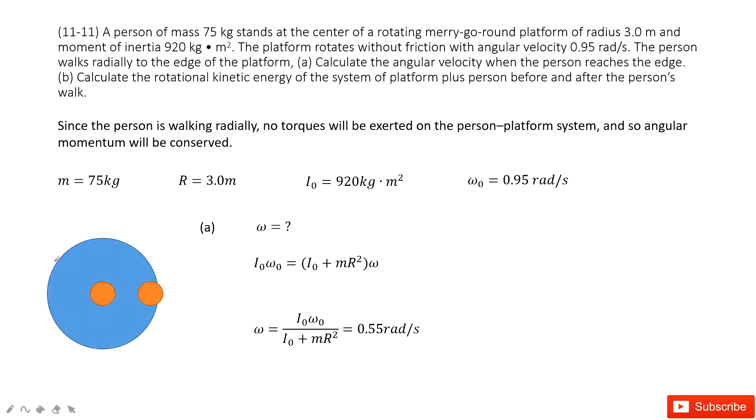And also the initial angular velocity, omega-0, is given. Now we need to find the final angular velocity when this person walks from the center to the edge, right?